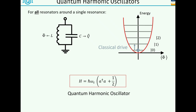If I just apply a classical drive, all I will create in this oscillator is pretty much just a coherent state, so a very classical quantum state. So this is sort of boring. So what I'm trying to do now in the following is how can we use what I've shown you so far and actually build a qubit out of it.